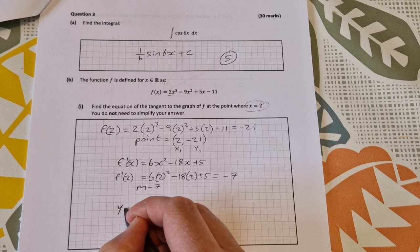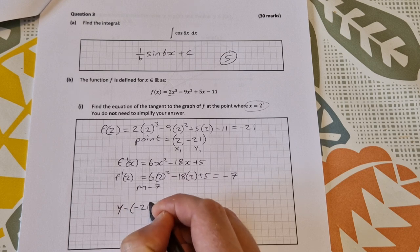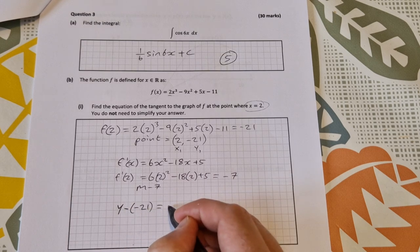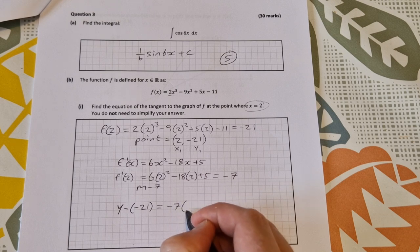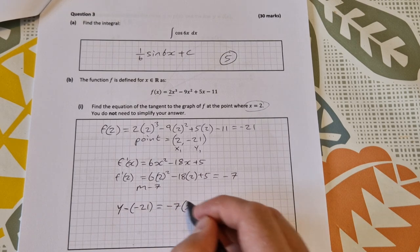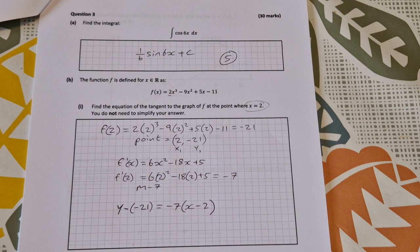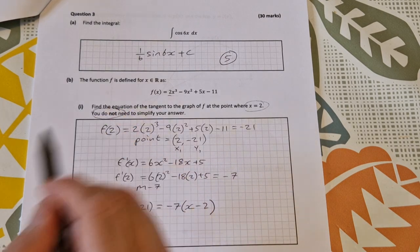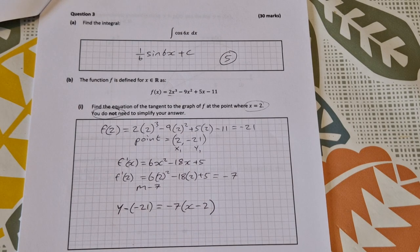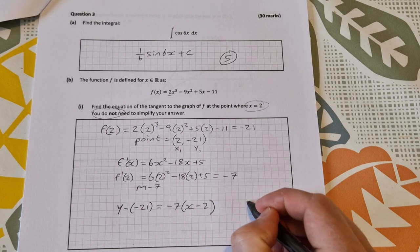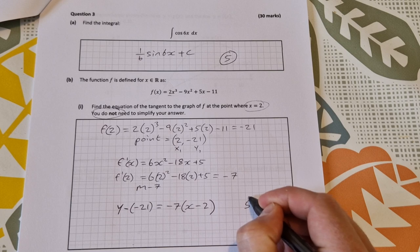Then we'll go to our equation of the line formula. So y minus y₁, which is y minus (-21), is equal to m, which is minus 7, times x minus x₁, so that is x minus 2. We can leave it at that because it says you do not need to simplify your answer. That is worth 5 marks out of 30.